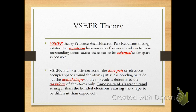VSEPR theory is the theory that governs how we're naming these shapes. And what that stands for is valence shell electron pair repulsion. Basically, the molecules and the bonds will orient themselves in a way that they minimize those repulsions of all those electrons. The atoms themselves repel each other, and then the electrons on the central atom — if there are lone pairs, they occupy space around that. They occupy space on the terminal atom too, but those will not affect the shape.